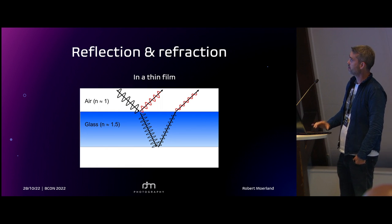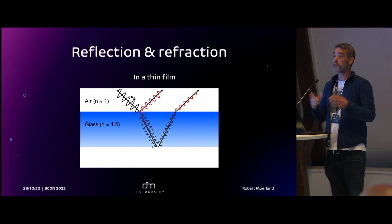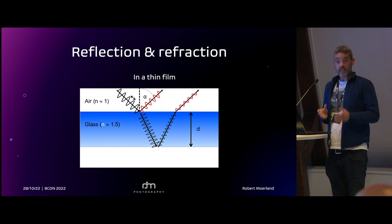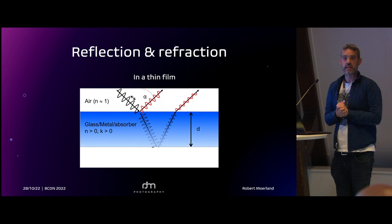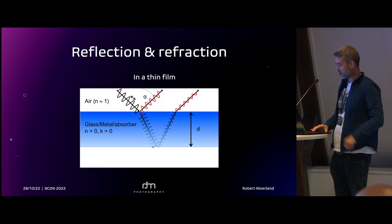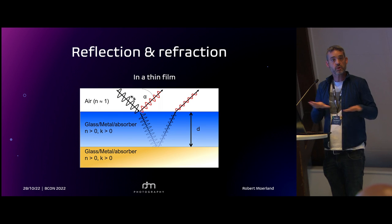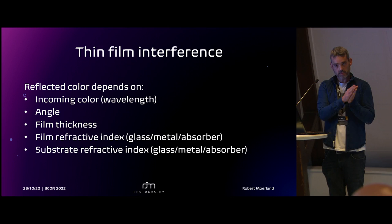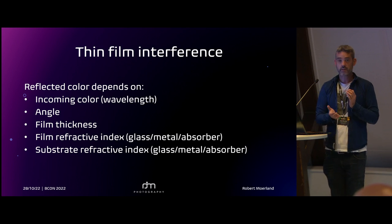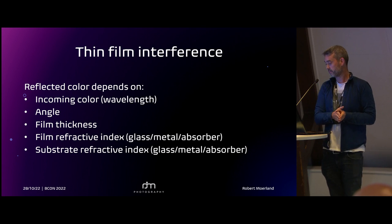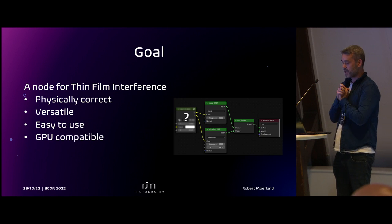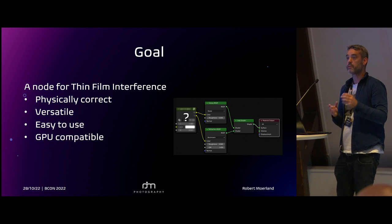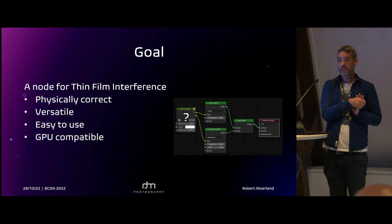The color of the pixel depends on the wavelength of the light, the angle of incidence, the refractive index of your film, and the thickness of the film. You can go beyond this — it doesn't need to be glass, it can be a metal or an absorber, and the substrate can also be a metal, glass, or absorber. So summarizing: thin film interference and the color of your pixels depend on the incoming wavelength, the angle, the film thickness, the refractive index of your film, and the refractive index of your substrate. My goal was to create a node for thin film interference that would replace the Fresnel node and give you a physically accurate model that actually shows the interference, is versatile, easy to use, and GPU compatible.